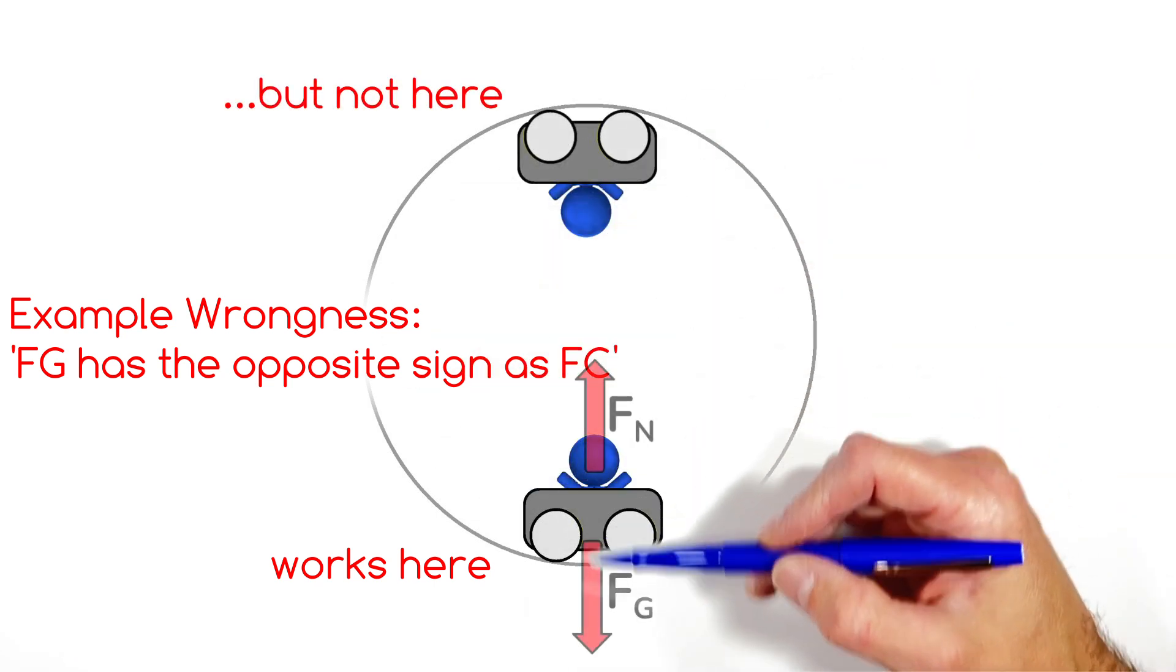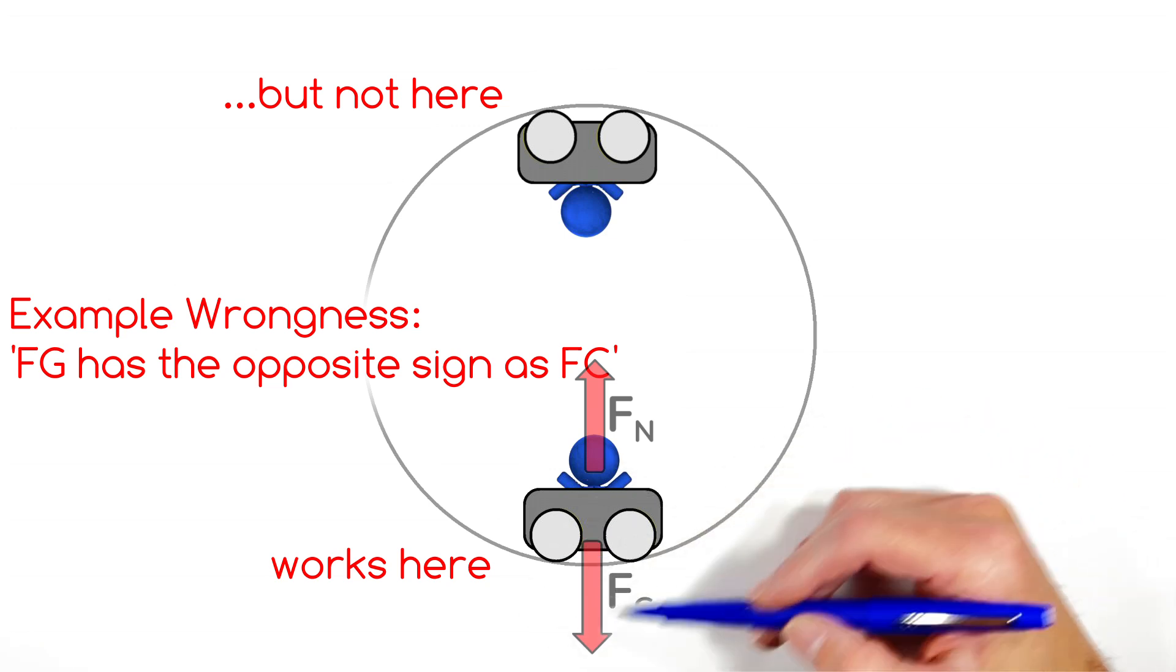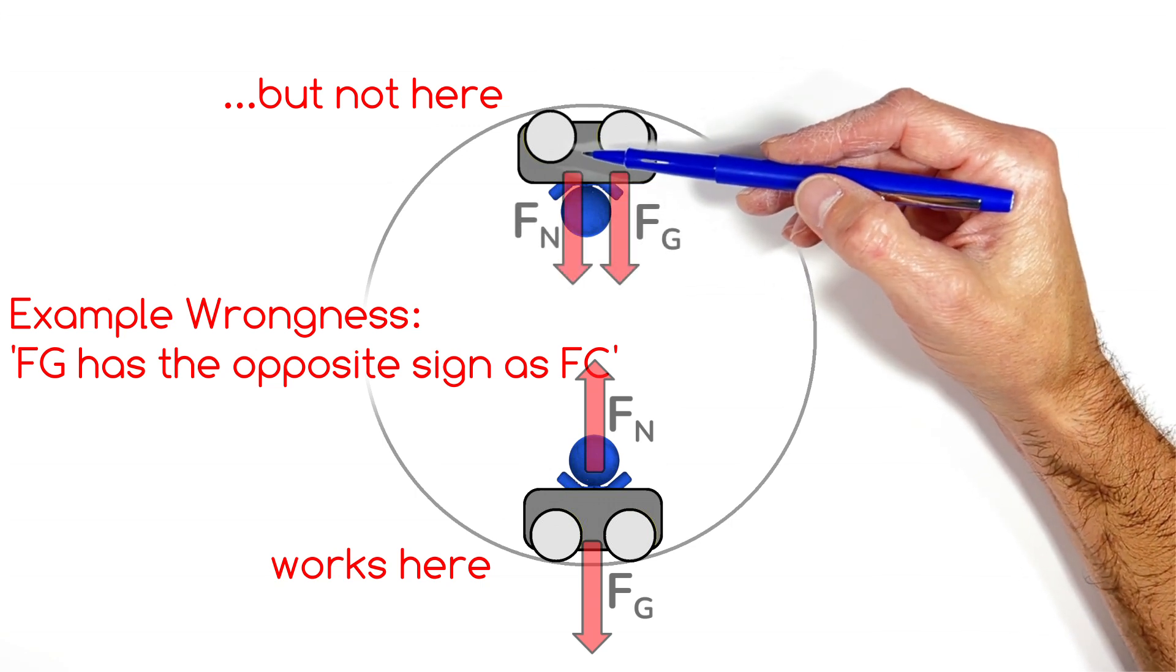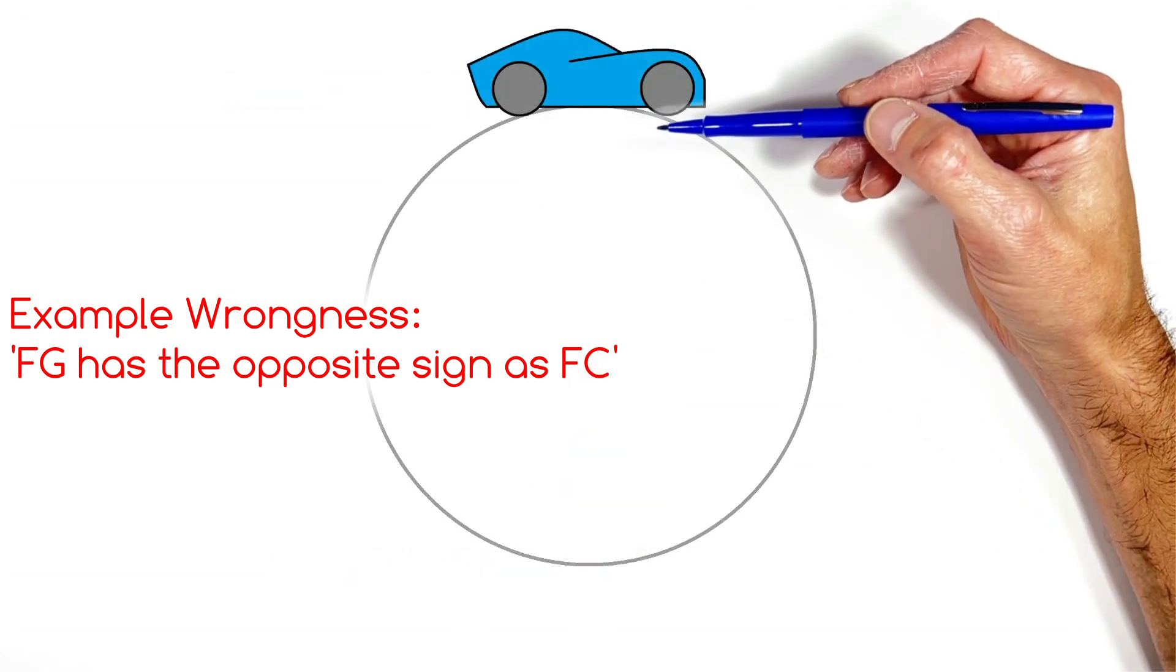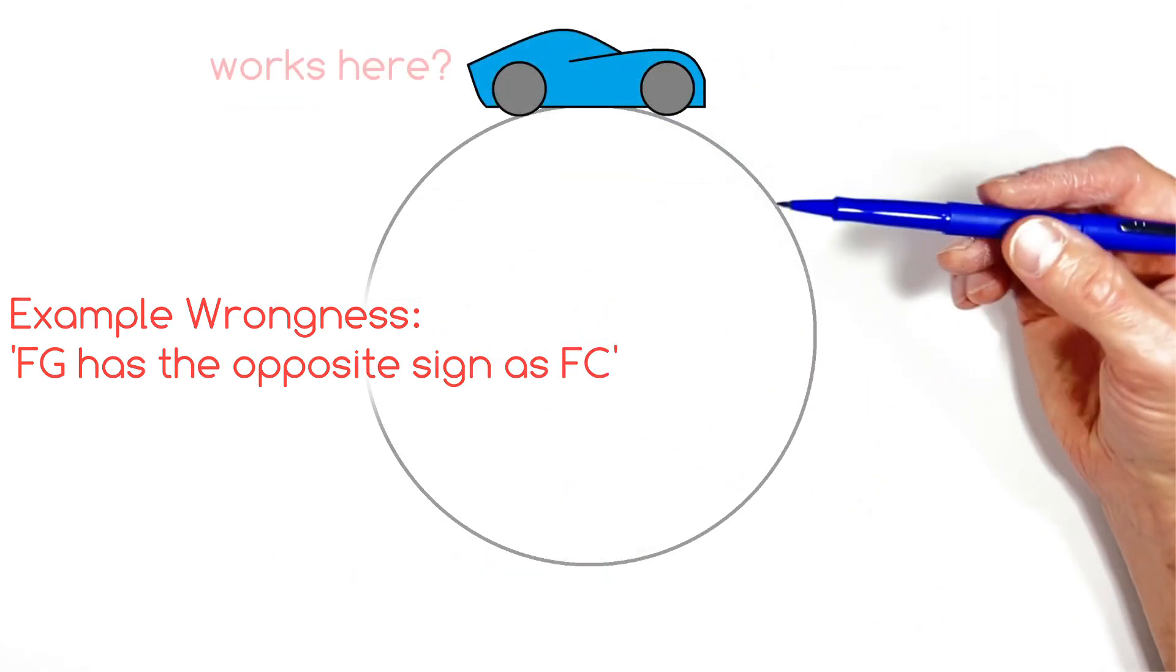For example, gravity and the normal force are in opposite directions and therefore have opposite signs down here at the bottom of this loop. But if we stick a roller coaster up here on the top of the loop, they're both in the same direction, so they have the same sign. But for a car at the top of this loop that is going over the top of a hill, suddenly they again have opposite signs.